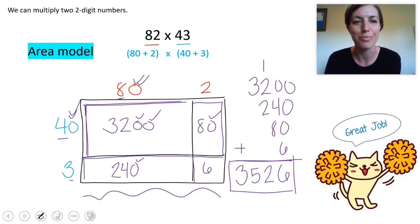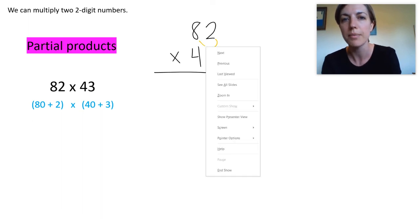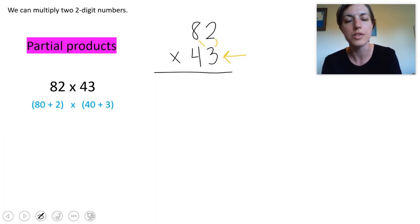Now let's take a look at the partial products strategy. So for partial products we are going to write the numbers vertically stacked like this. And then we're going to start on actually this bottom right number the 3 in the ones place. We're going to multiply that by each digit on the top number. And then we're going to go over to the 4 in the tens place this 40. And we're going to multiply that times those top digits as well. So let's take a look at that 3 first.